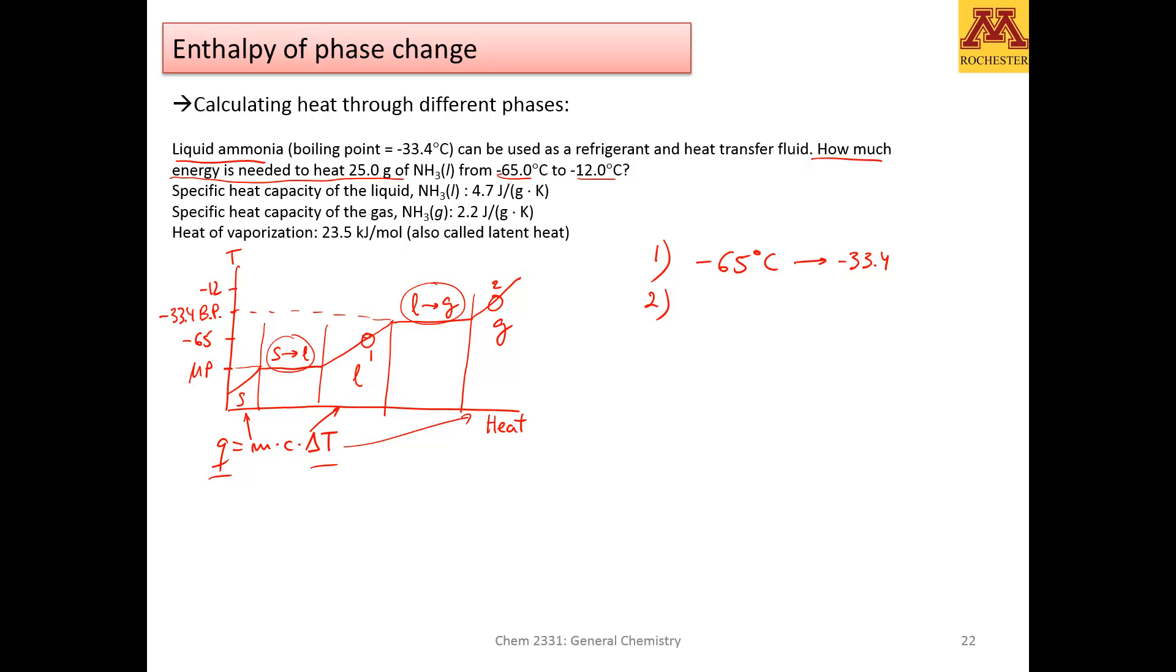The second step will be the phase change liquid to gas at minus 33.4 Celsius. And the third step will be going from minus 33.4 to minus 12.0 Celsius. So you have to calculate the heat associated for each of these three processes, because you cannot, there isn't a single formula going from the liquid to gas because there isn't a single heat capacity.